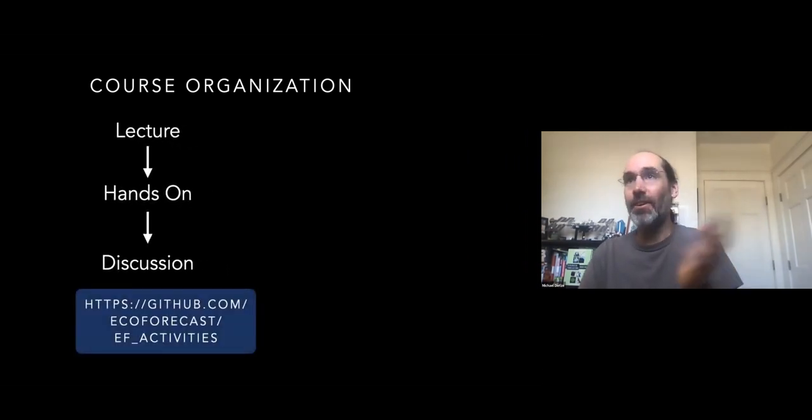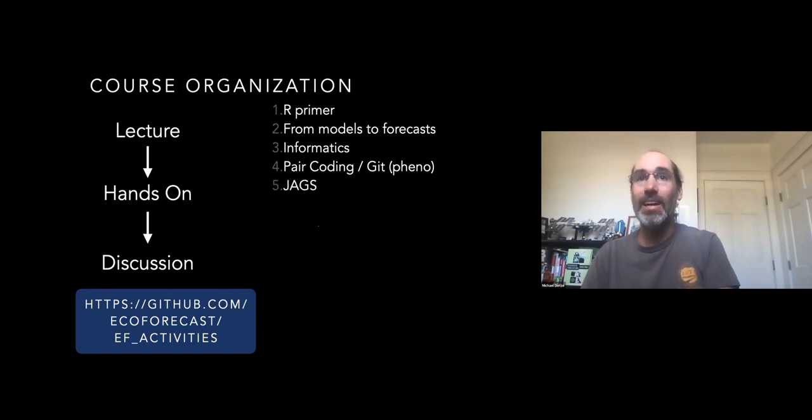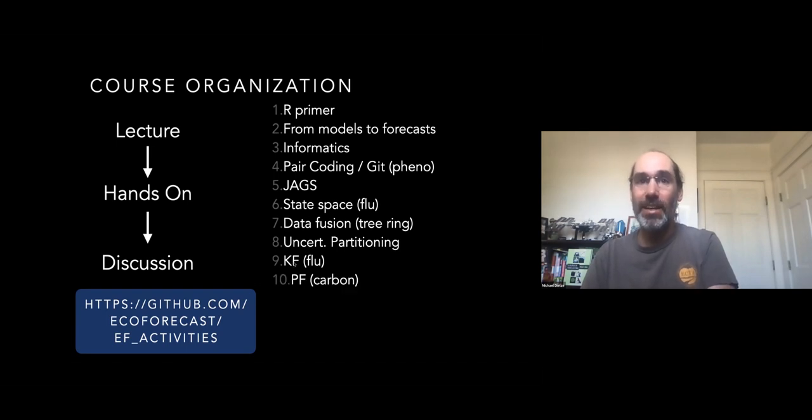The hands-on activities have all been up on GitHub the entirety of the course and are referenced in the book. These start with simple things like an R primer, thinking about how we translate from models to forecasts, laying down the informatics and coding foundational skills, a primer on JAGS, and then learning about state-space models, data fusion, how to partition uncertainty, learning about the Kalman filter and particle filter and kind of the core iterative forecasting algorithms, model assessment, and structured decision-making.